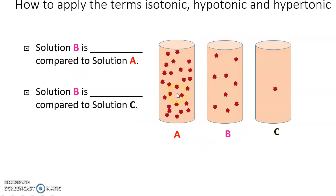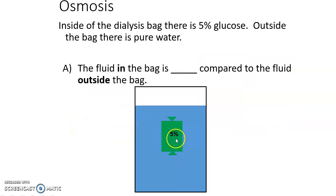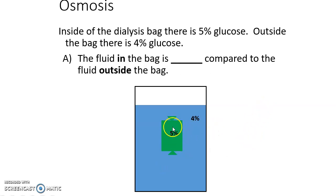Solution B is what to solution A? Solution B is hypotonic compared to solution A. Solution B is what to solution C? Solution B is hypertonic compared to solution C. These terms are all relative, comparing two things to each other. Here is a dialysis bag of 5% glucose in pure water. The fluid in the bag is what compared to outside? The fluid in the bag is hypertonic. It has 5% glucose, outside has 0% glucose. Now, if the inside of the dialysis tube is 5% glucose and outside the solution is 4% glucose, the fluid in the bag is what compared to the fluid outside? Surprise, surprise, it is still hypertonic. There's still more glucose solution, higher concentration, 5% inside than outside.